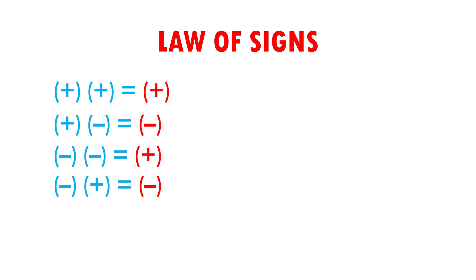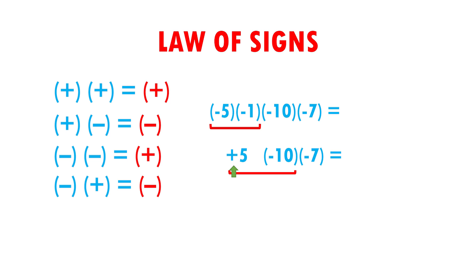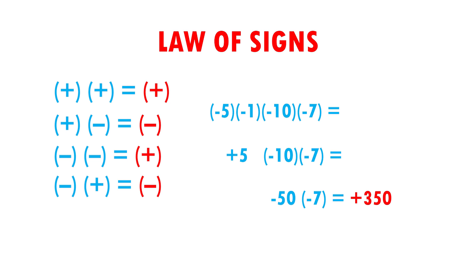Our next example is minus five times minus five times minus one times minus 10 times minus seven. I am going to start by multiplying minus five times minus one. Negative times negative is positive, and five times one gives me five. Now the minus 10 and minus seven I lower them exactly the same. I am going to multiply plus five times minus 10. Positive times negative is negative, and five times 10 equals 50. Minus seven goes down exactly the same. Now I will multiply minus 50 times minus seven. Negative times negative gives me positive, and 50 times seven gives me 350. My result is plus 350.